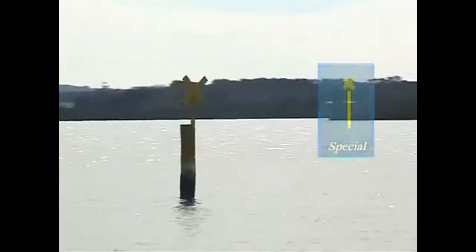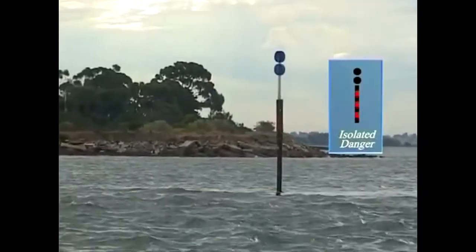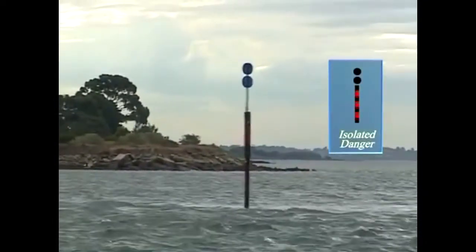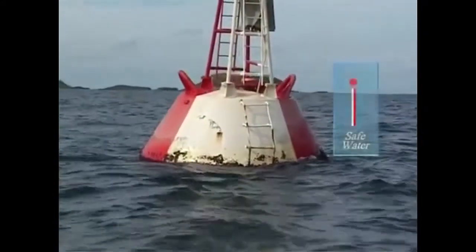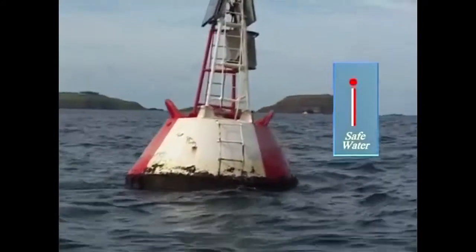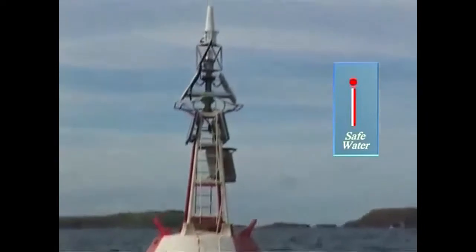The third are special marks, which indicate a special area which will be mentioned on the chart. The fourth are isolated danger marks, which indicate a dangerous submerged object. And the fifth are safe water marks, which indicate that the water all round is navigable.